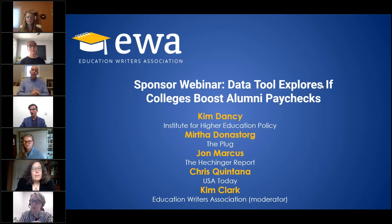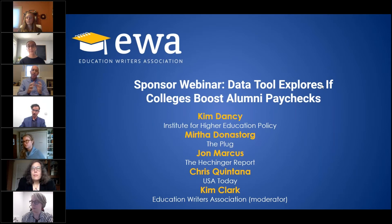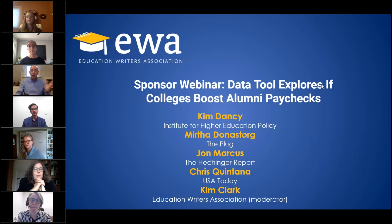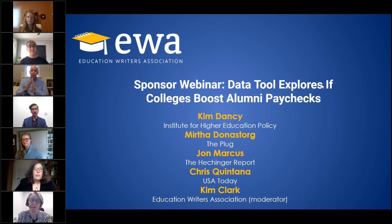Third Way has also used this data to put together information about which college majors actually pay less than what high school graduates are making in your state, which is really interesting. The third organization is the Foundation for Research and Equal Opportunity, which looks not only at earnings two years out from graduation but over a graduate's entire lifetime by extrapolating from Census Bureau data. I found that more than a quarter of programs left students financially worse off than if they had never enrolled in college.